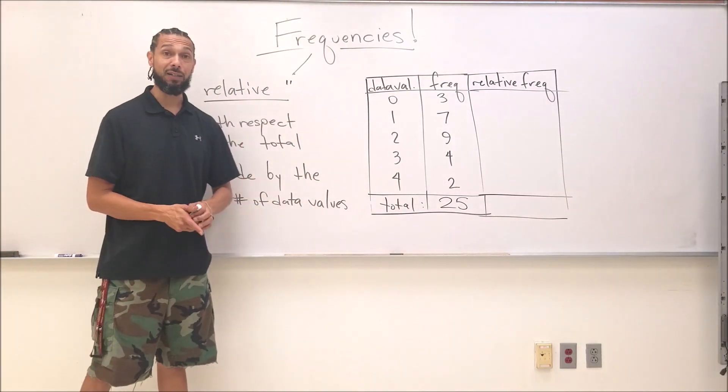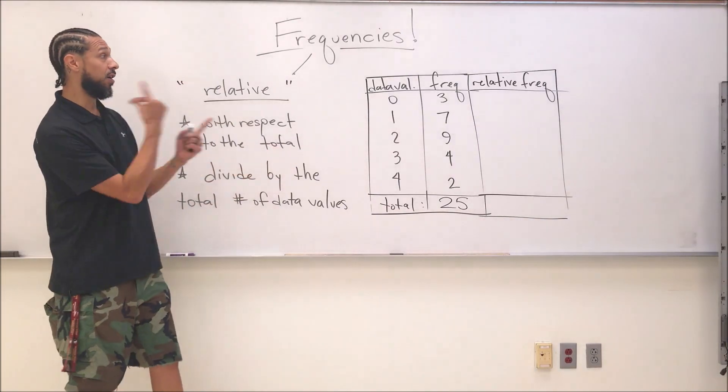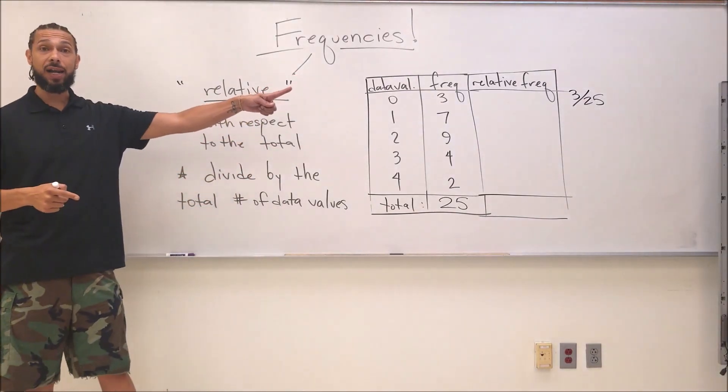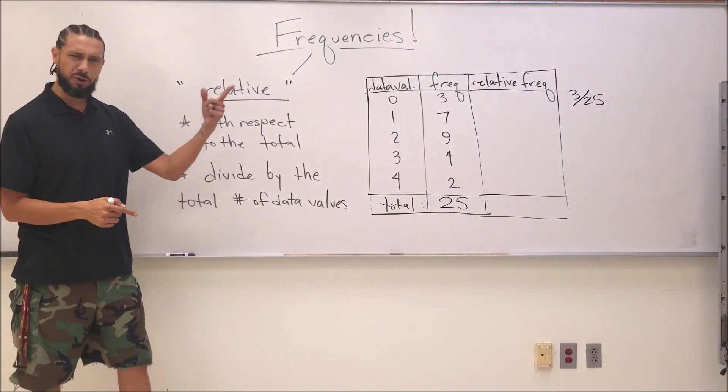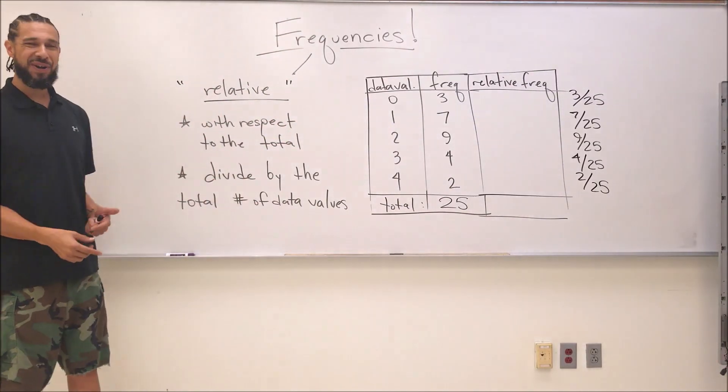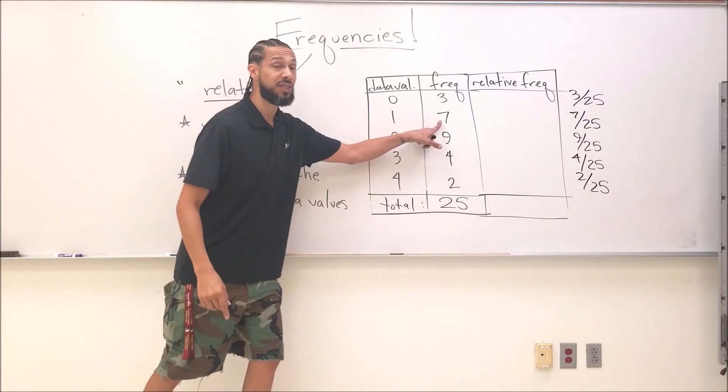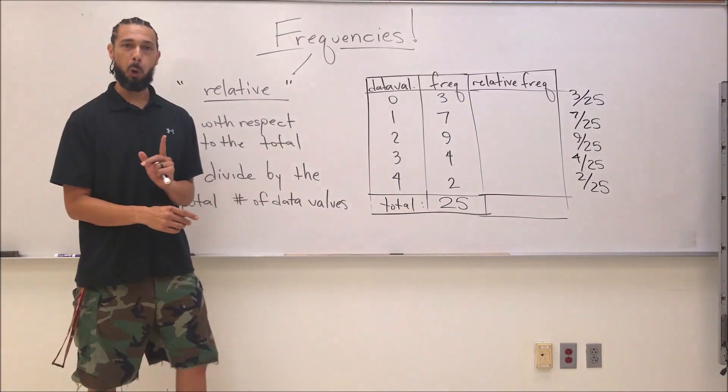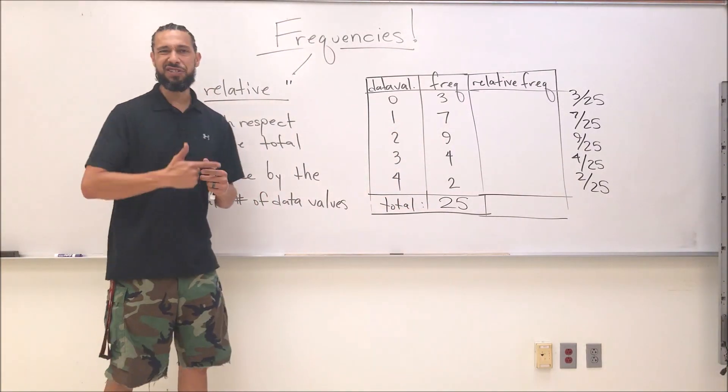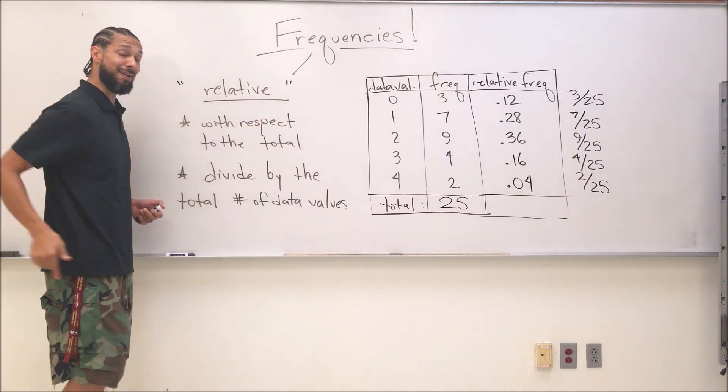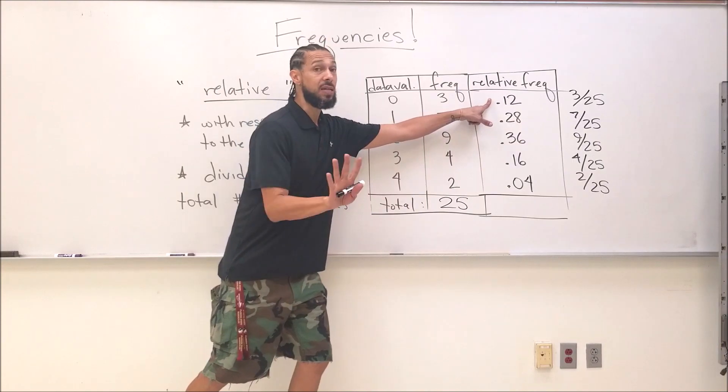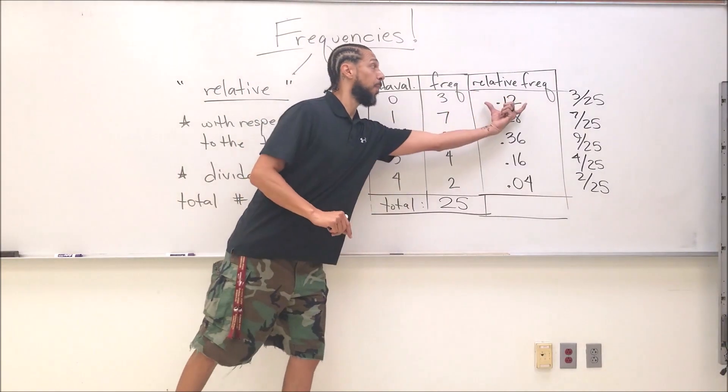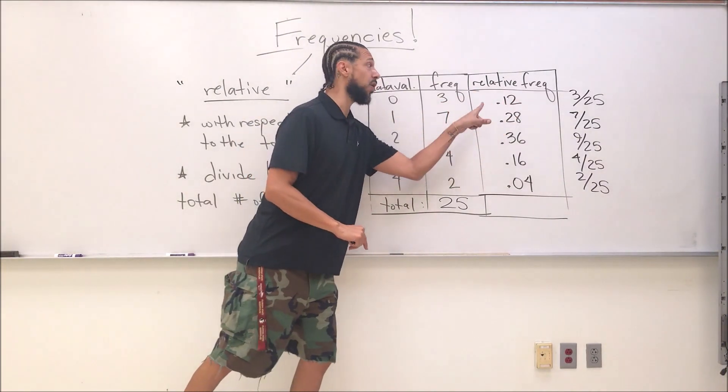I can find the fraction of zeros I have in my entire list. That's what this relative frequency is - the fraction or proportion of that data value compared to the whole list. How many zeros do I have? Three divided by 25. I'm going to turn that into a decimal and put the decimal inside. Let's put the rest of the fractions there. I took each frequency and divided by the total.